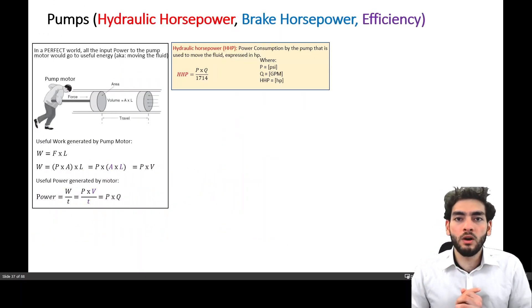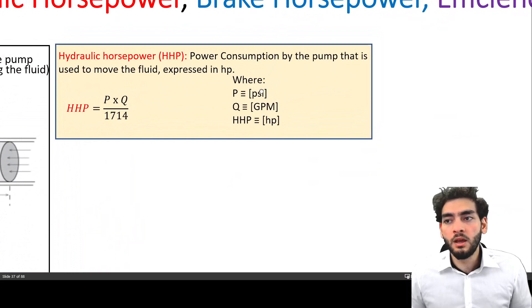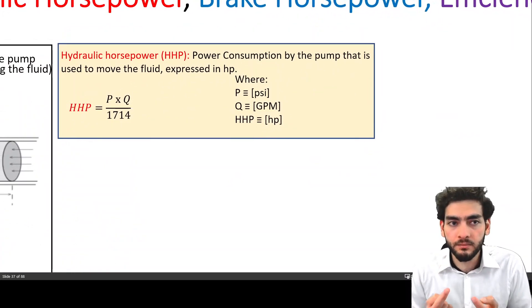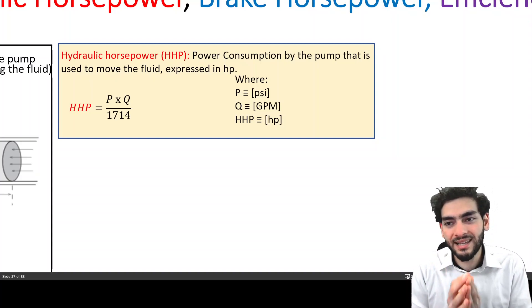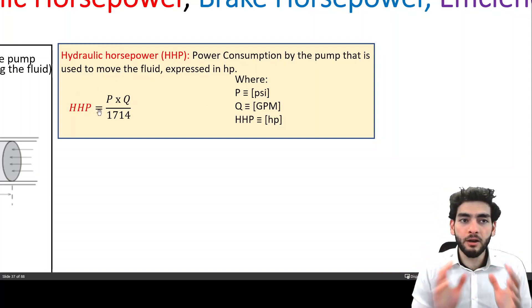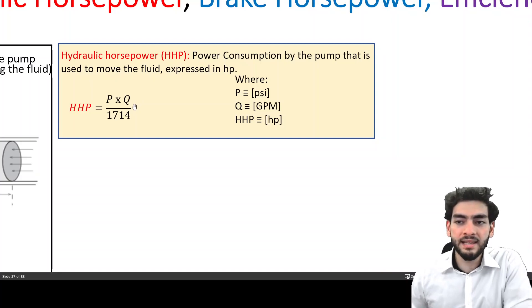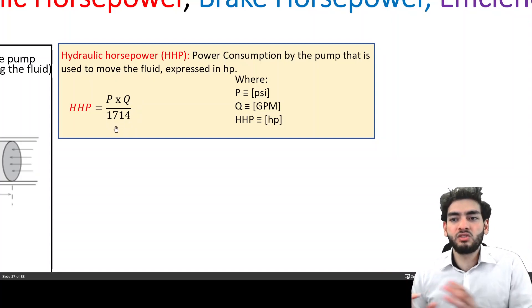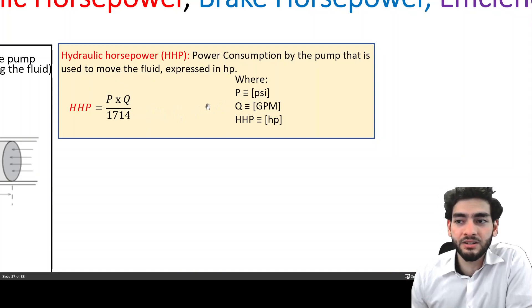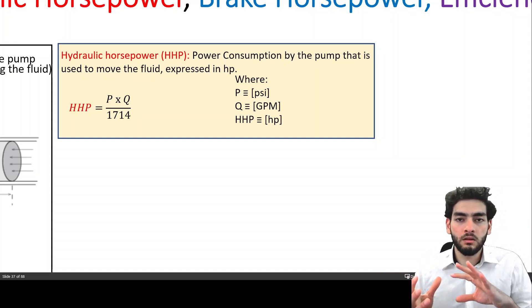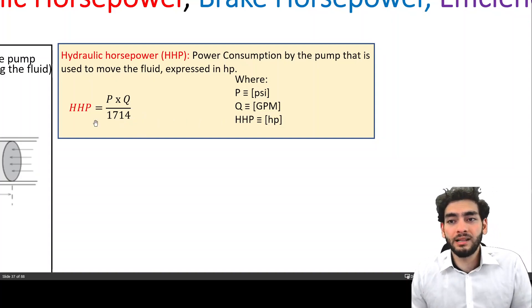The first parameter to be aware of is hydraulic horsepower. Hydraulic horsepower is the power consumption by the pump that is used to move the fluid — it is the useful energy being transmitted to the fluid itself. The hydraulic horsepower is pressure times the volumetric flow rate. The number we divide by — 1714 — is a unit conversion, because pressure is expressed in PSI and volumetric flow rate in gallons per minute, and dividing by 1714 converts that power to horsepower units.